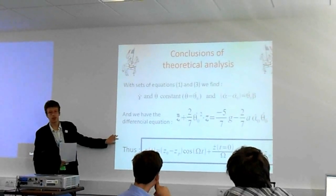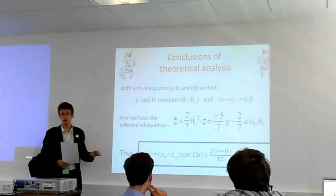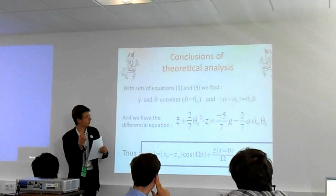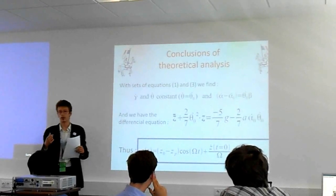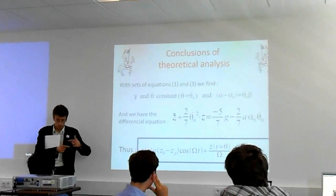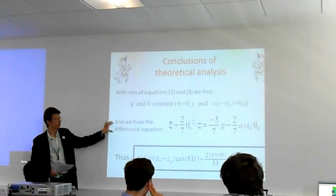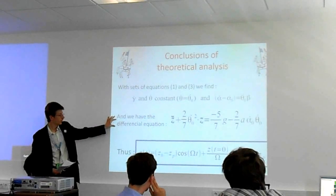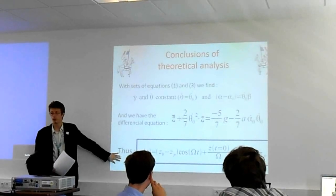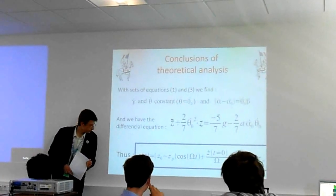As I said, with set of equations one and two, we find that the rotation speed gamma and theta are constant, which means that the ball is rolling like this on itself when the hole is here, at constant speed, and around the hole at constant speed. We have an expression of the rolling like this. With all this, we find a differential equation, second degree differential equation, which has an easy general solution. In the end, we find this expression for the height of the ball as a function of time.